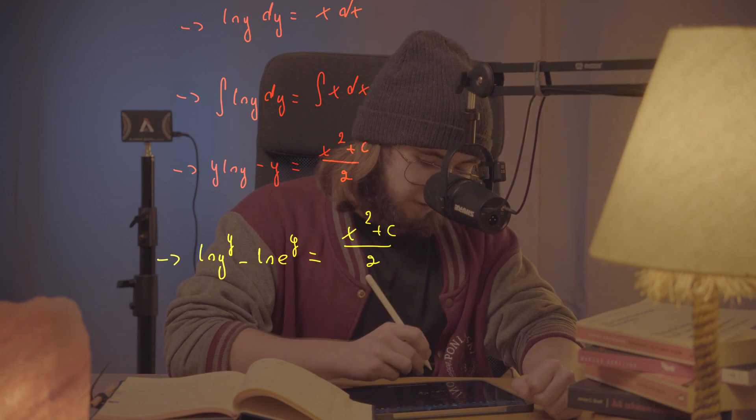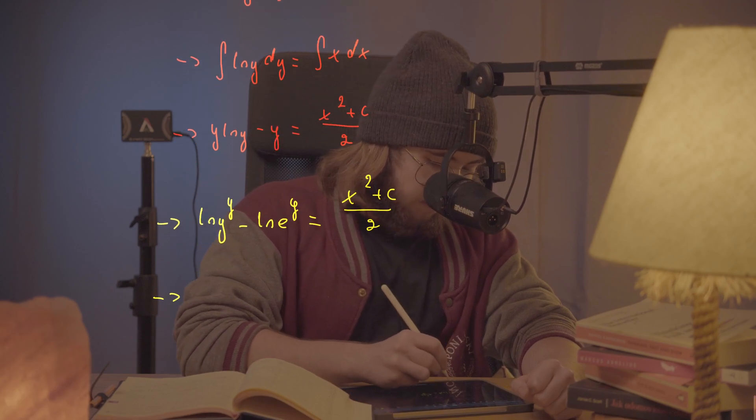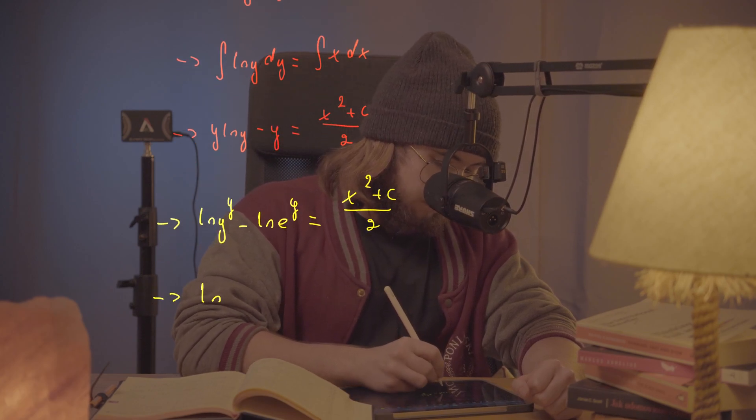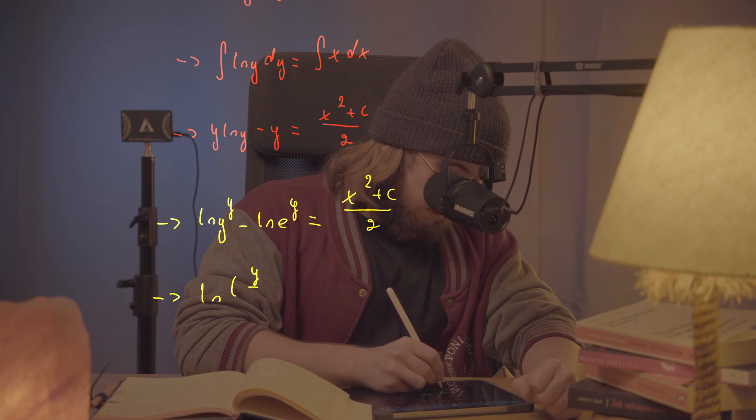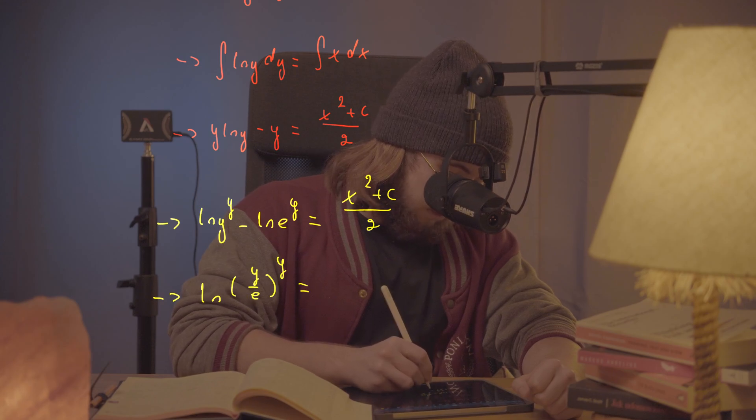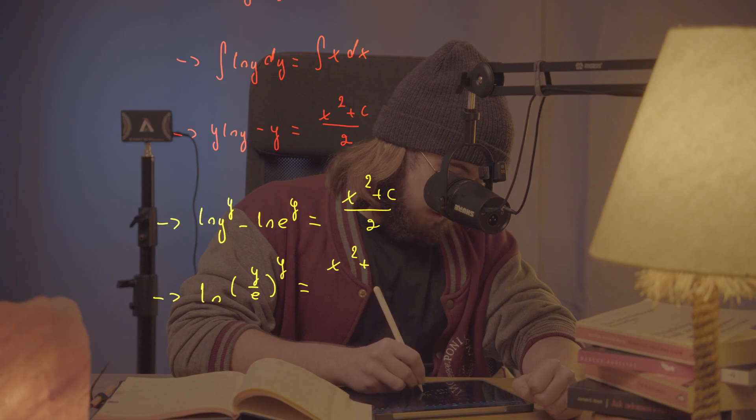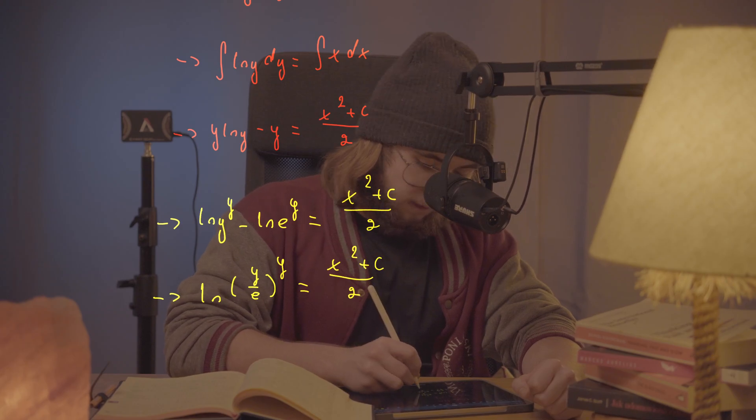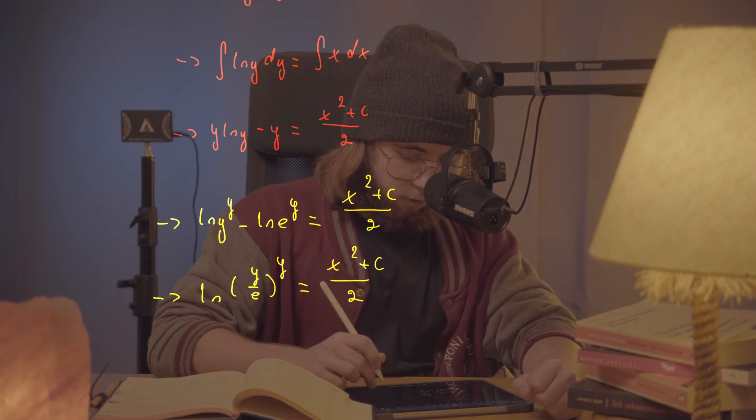And that's going to be all equal to just x squared plus c all over 2. What I did to the left-hand side doesn't change a thing. But now I can just write it as natural log of y/e all to the power of y is equal to (x squared plus c) all by 2.